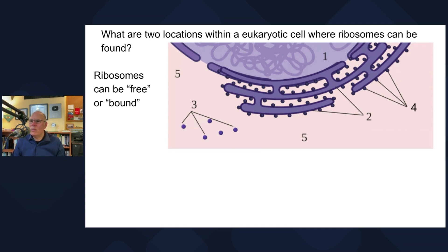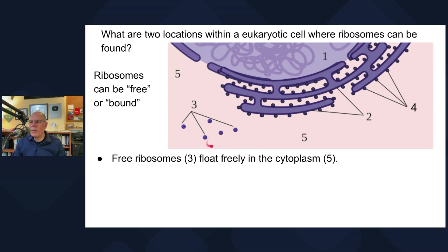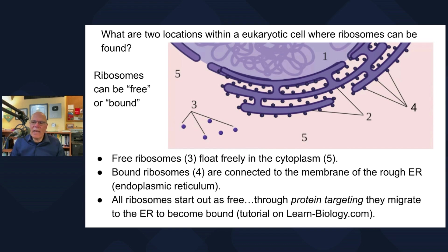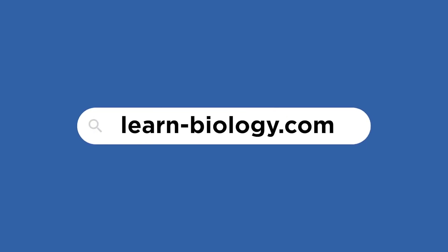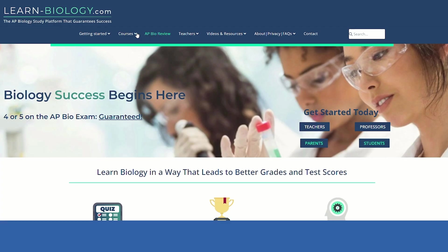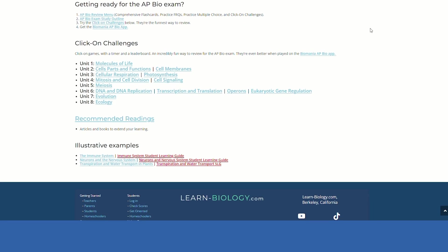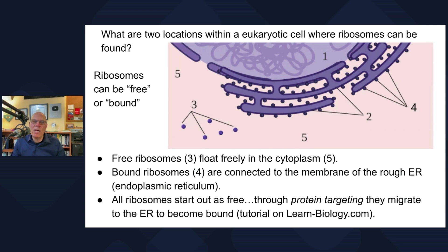In a eukaryotic cell, ribosomes can be free or bound. Free ribosomes are floating freely in the cytoplasm, whereas bound ribosomes are connected to the membrane of the rough ER. The key idea is that all ribosomes start out as free, and through a process called protein targeting or signal translocation, they migrate to the ER to become bound. There's a tutorial about that on learn-biology.com.